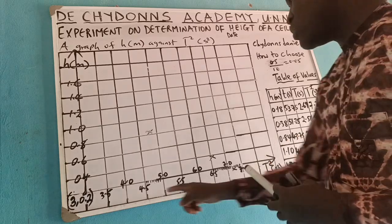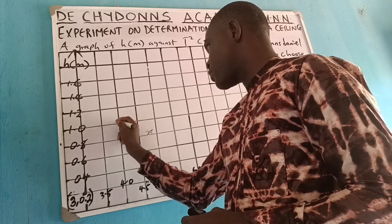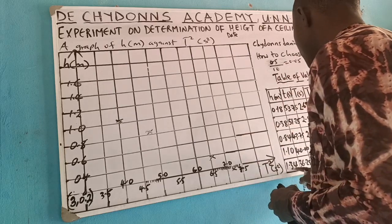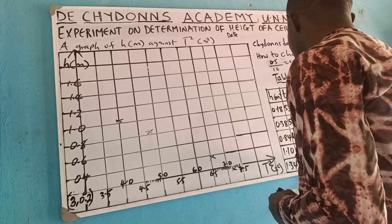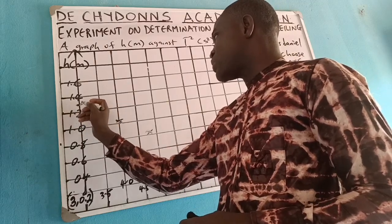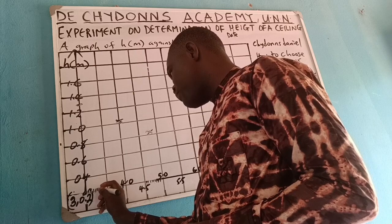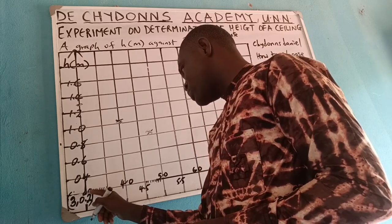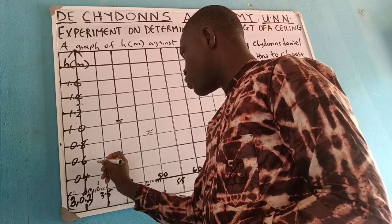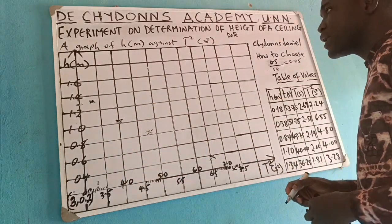For the fourth point, H = 1.1 against T squared = 4.0. This is straightforward — T squared = 4.0 is on a major gridline, and H = 1.1 is between 1.0 and 1.2. For the fifth point, H = 1.34 against T squared = 3.28. Locate 3.28 on the horizontal axis and 1.34 between 1.2 and 1.4 on the vertical axis. All five points are now plotted.